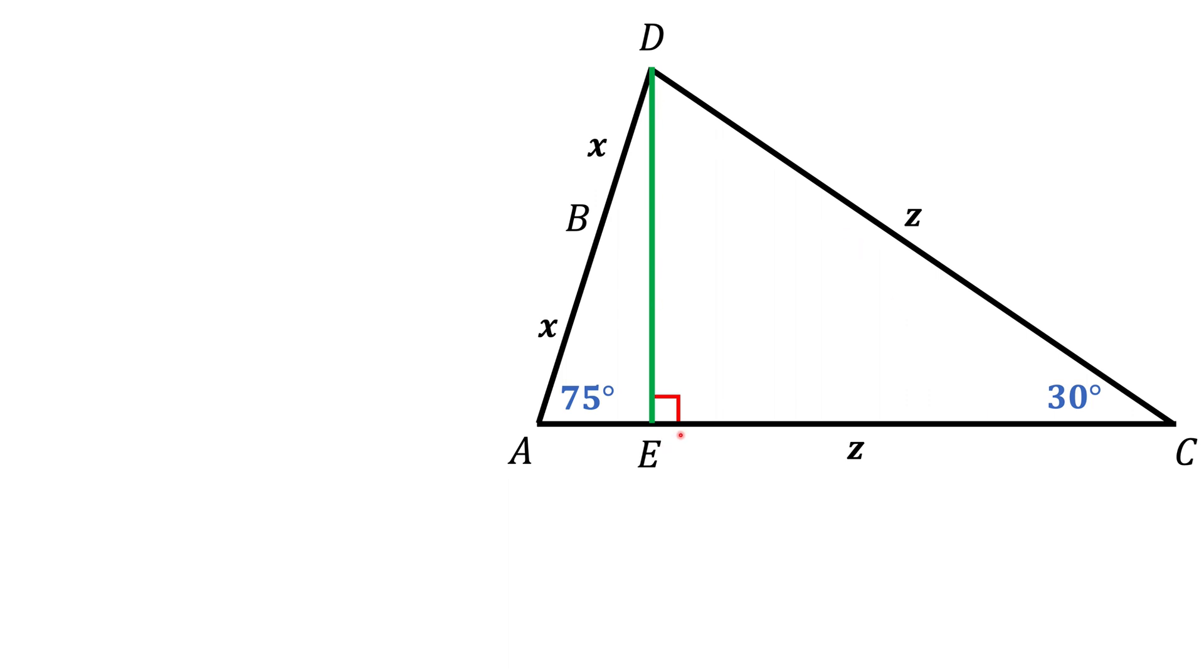Notice the triangle on the right, EDC, has an angle of 30 degrees. So the other angle is going to be 60 degrees right here. And that means we have 30, 60, 90 degree triangle. And we really know everything about this triangle.